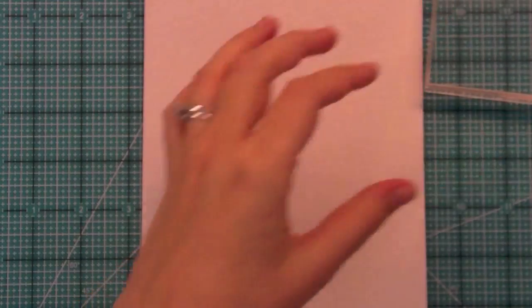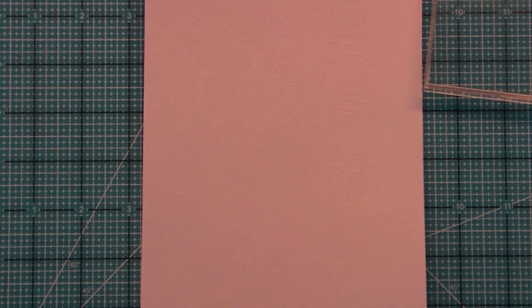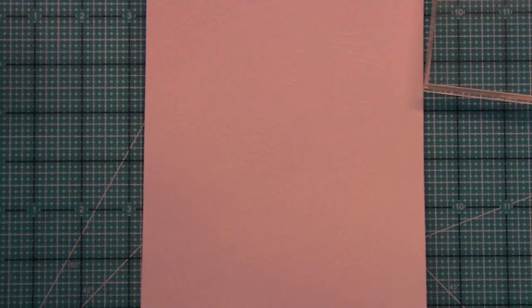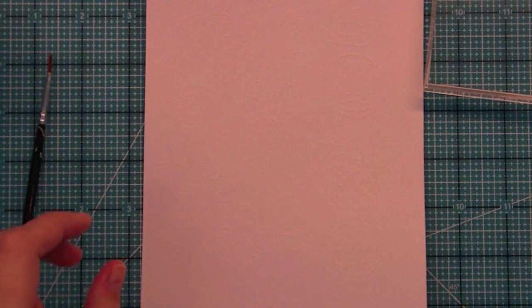Right here we're going to use different techniques like direct to the paper and using that acrylic block as a palette. I've got some water in that little tub there and then some paint brushes.